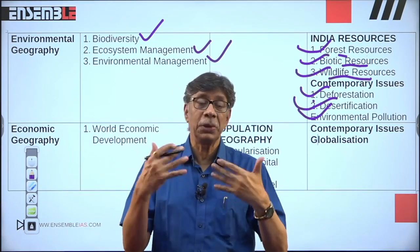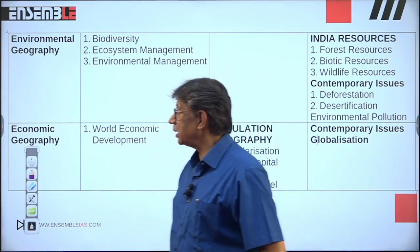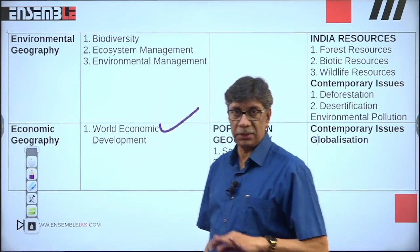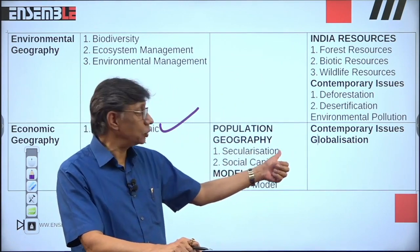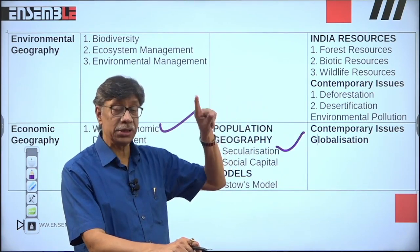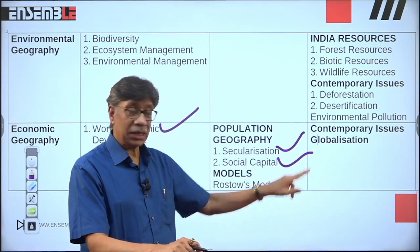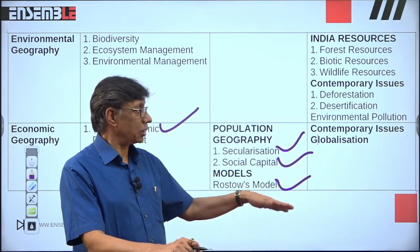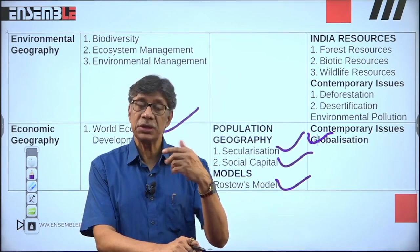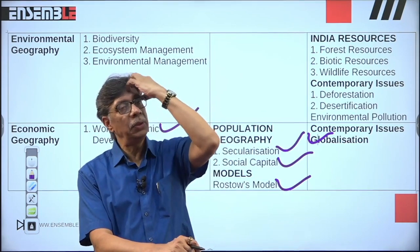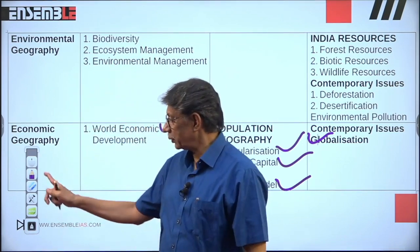In the human geography section, under economic geography, you have a topic called world economic development. In population geography, a correlated topic is secularization — and I repeat, it's not secularism, it's secularization — and social capital is a part of it. Then in contemporary issues, globalization is one component associated with economic development — it can be seen as both a cause and an effect of economic development. That is what globalization is all about in this context.